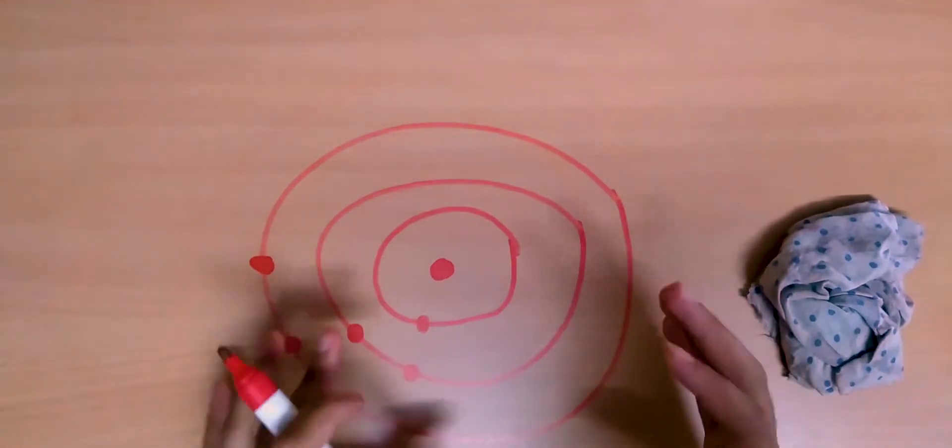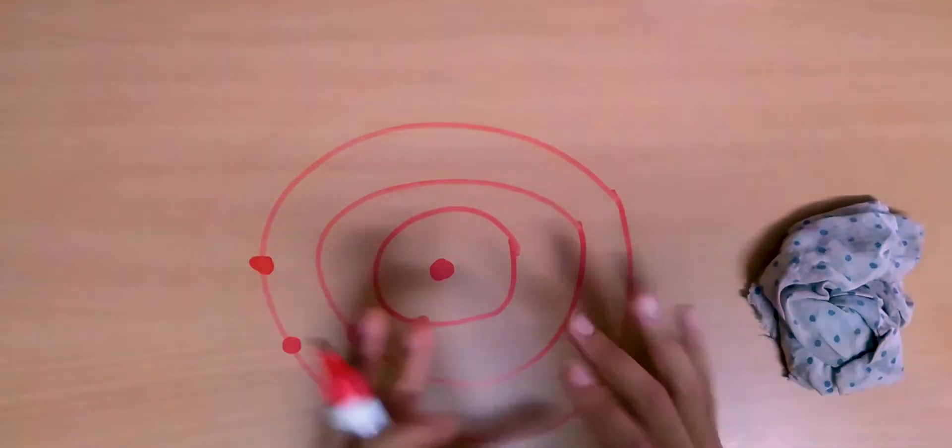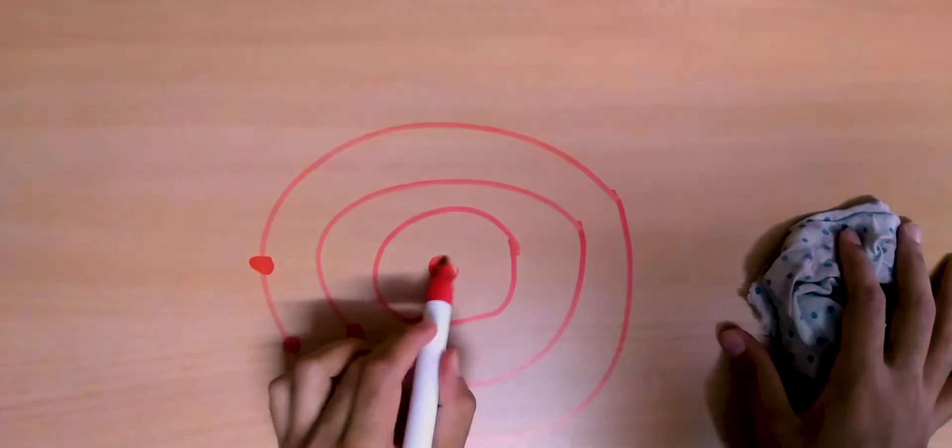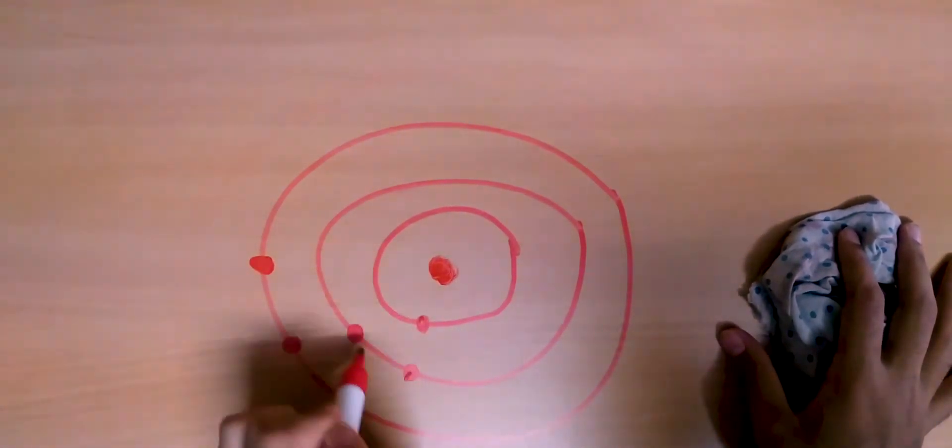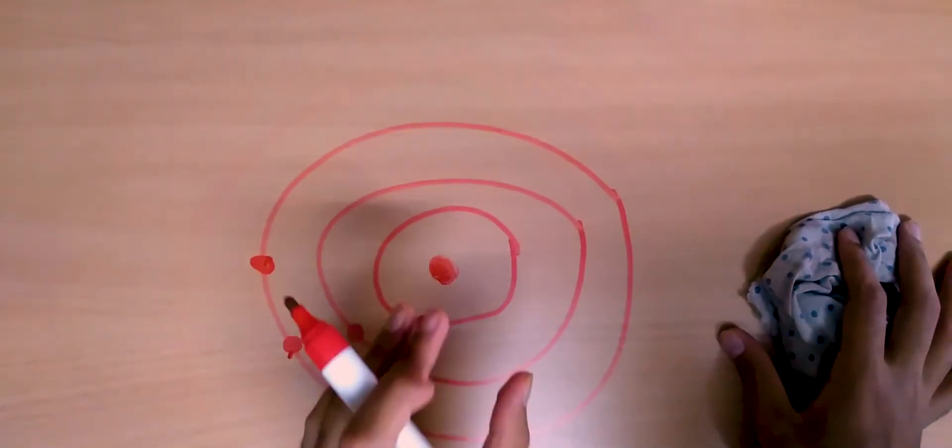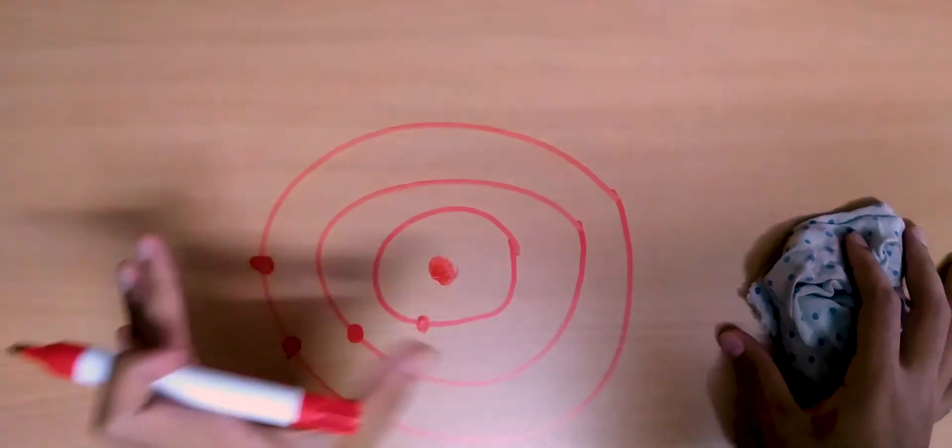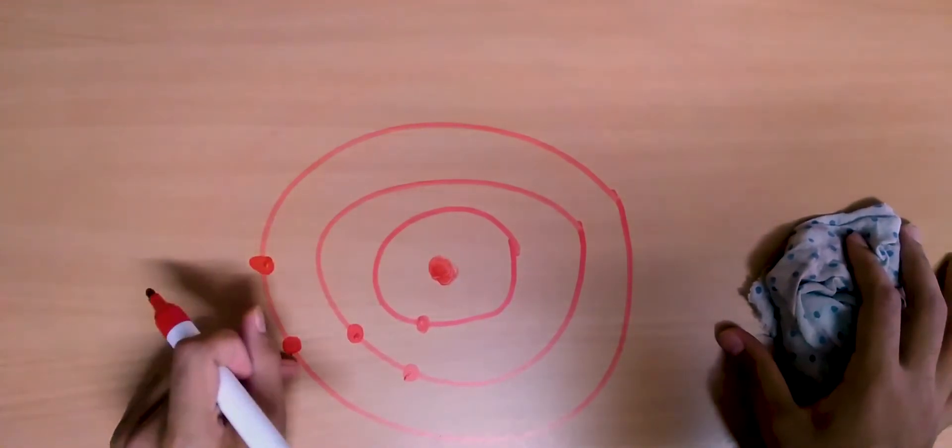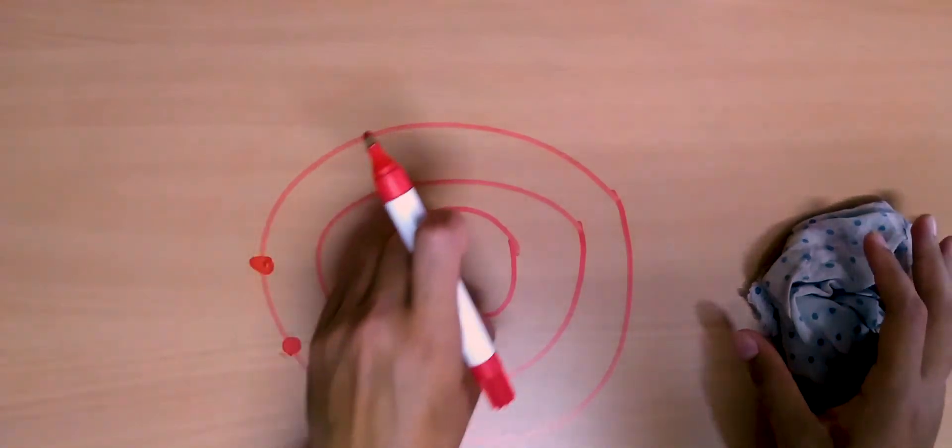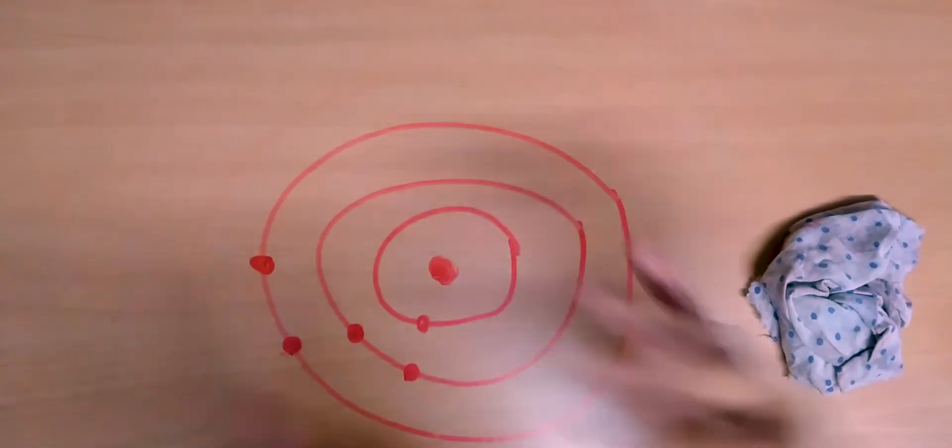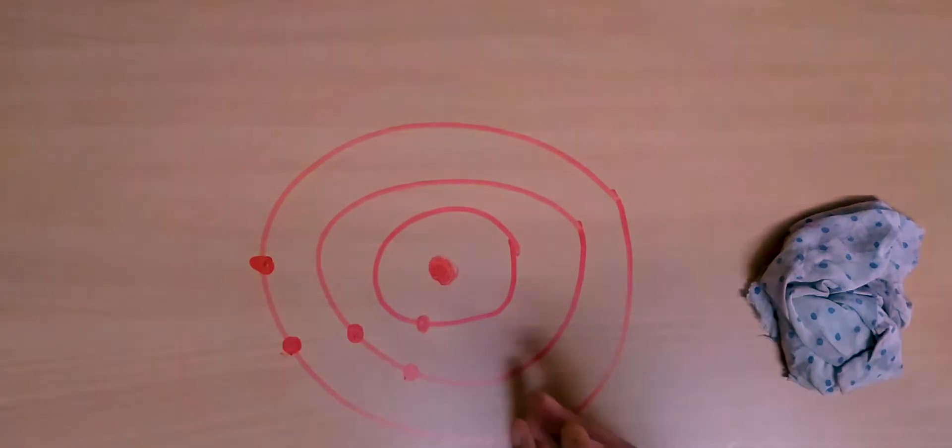This is how we can visualize our atom: the nucleus here with all the mass inside, and these small negatively charged electrons inside these very specific orbits. In the next video, we'll quickly have a look at the nucleus, what it's made up of, and the basics of that part. That's it for this video.